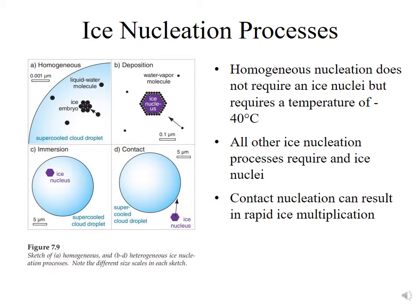Ice nucleation can occur through one of several different mechanisms. The first is homogeneous nucleation, where you have a supercooled cloud droplet that spontaneously freezes without the presence of an ice nuclei. This homogeneous nucleation can only occur at temperatures of minus 40 degrees Celsius. It's physically impossible for liquid water to exist at temperatures colder than minus 40 degrees Celsius because the water molecules will spontaneously arrange themselves into a matrix that allows ice formation.